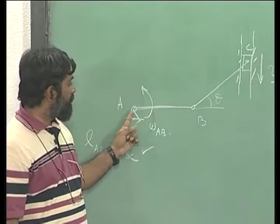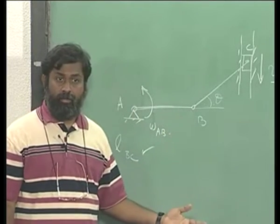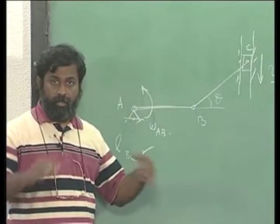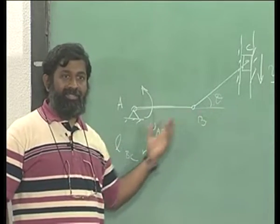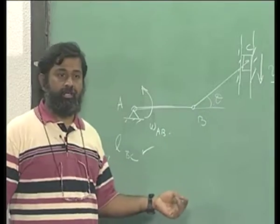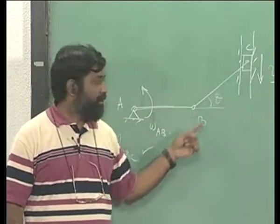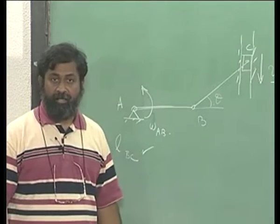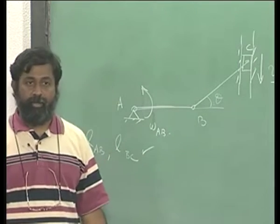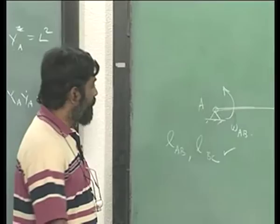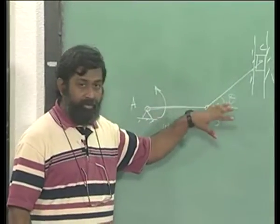Is the geometry given? Yes. At a particular location, at a particular configuration of this, let's say the quantities are given. What are the quantities? The length of AB, the length of BC, and the angle at the instant we want to find out. Let's say these are given which means the entire geometry is given.